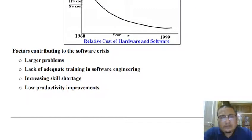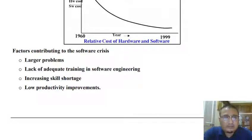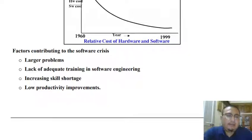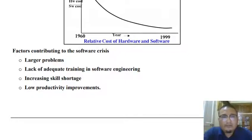Let us also list the factors contributing to software crisis. Problem size may be one of the prime reasons — if you have a very large problem, very difficult to manage, a developer may fail to develop a solution. Lack of adequate training in software engineering principles means developers may not be able to manage the problem. Increasing skill shortage can jeopardize the development of a software system. And low productivity improvements may also contribute to software crisis.